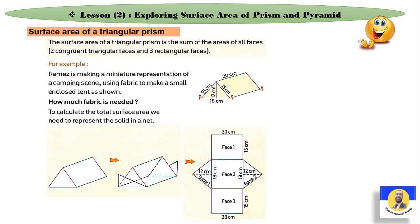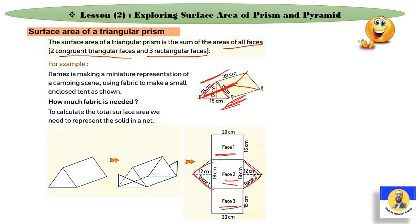Surface area of triangular prism. الـ triangular prism بيكون عنده two congruent triangular faces and three rectangular faces. دايماً بيكون عنده three rectangular faces وtwo triangular faces. واحدة من الـ rectangles على الشمال، واحدة على اليمين، وواحدة في الـ base تحت. محتاج تحدد الـ length والـ width والـ base والـ height عشان تقدر تجيب الـ area for each shape.